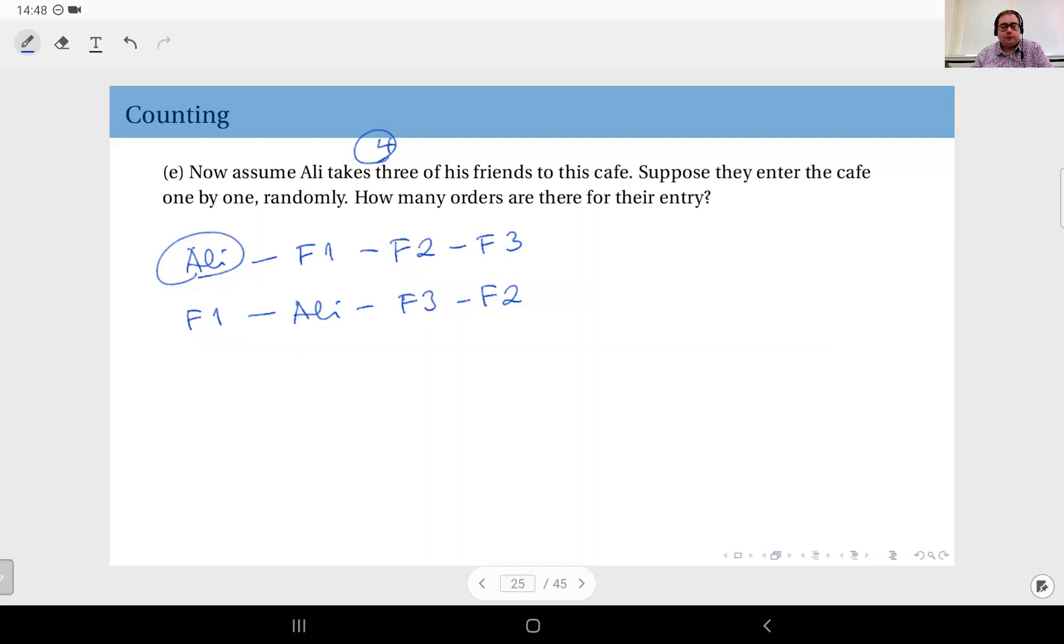So in this sequence, we are going to see all of those four people only once, and the length of the order is going to be four.